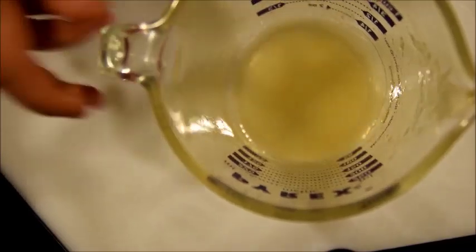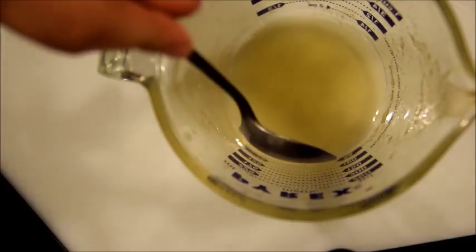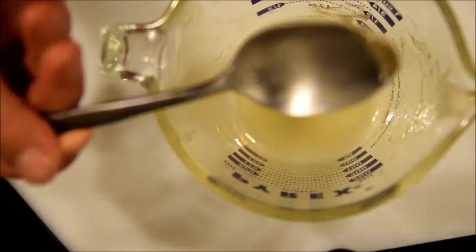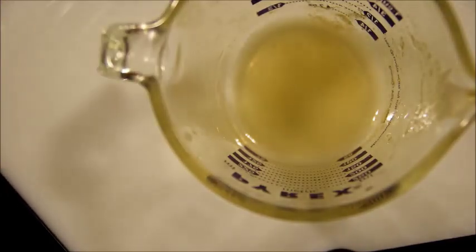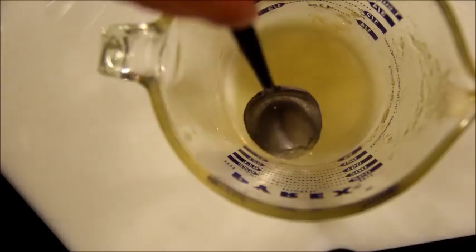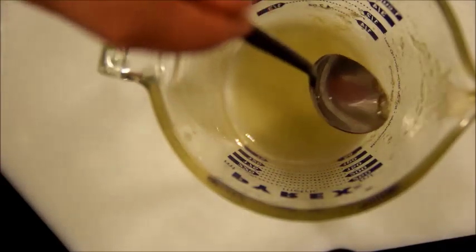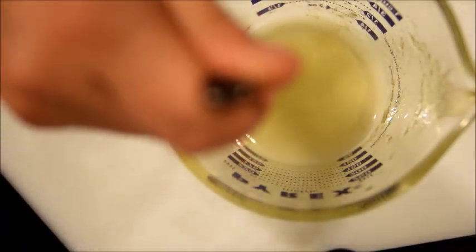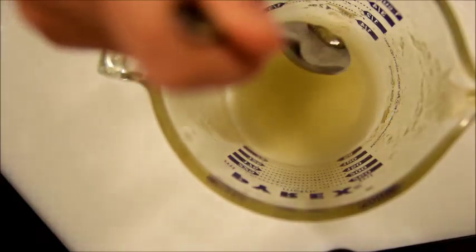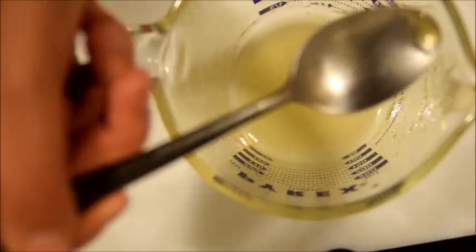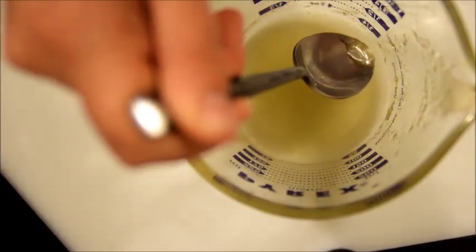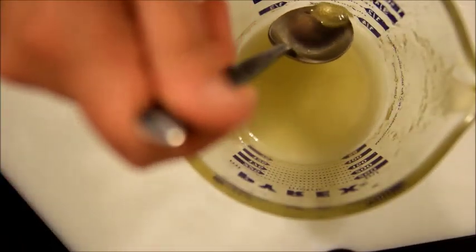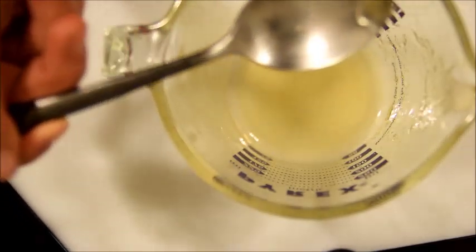Once you melt the gelatin, it always forms a layer up on the top, which I always remove for clarity. And if you see little air bubbles, try to catch them so that it doesn't pour into your mixture. Just scoop them out. It's important not to mix the gelatin because that'll just create more air bubbles.